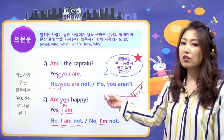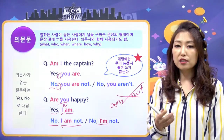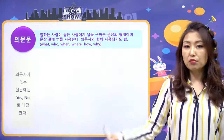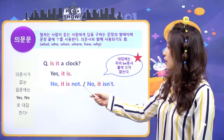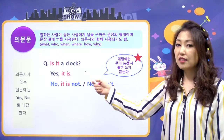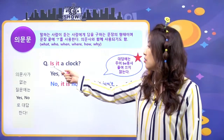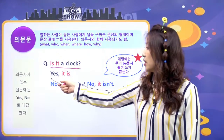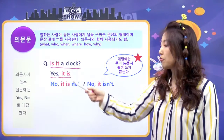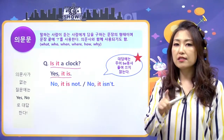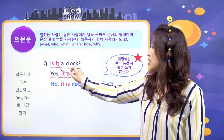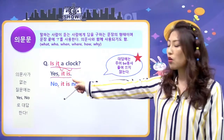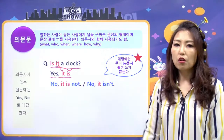I와 you는 서로 대답과 질문에서 인칭이 반대되는 경우고요. 그걸 제외한 나머지 대부분은 똑같은 주어로 답해요. 'Is it a clock?', 그것은 시계야? 라고 물었을 때, 'Yes, it is.' it으로 물어봤으니까 it으로 받고요, is로 물어봤으니까 is로 받으면 돼요. 과거가 되면 was로 물어봤으면 was로 받으면 되겠죠.